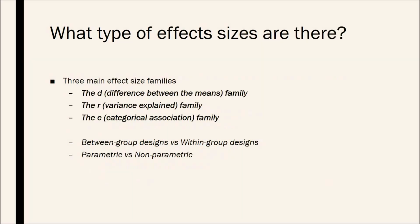So what type of effect sizes are there? There are three main effect size families. The D family, which is the difference between the means, the R family, which is the variance explained, and the C categorical association family. Now, within those three families, there are two different groups. Firstly, there is between group designs versus within group designs and parametric versus non-parametric designs.